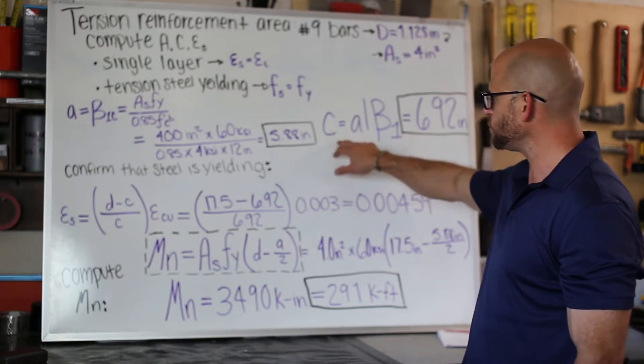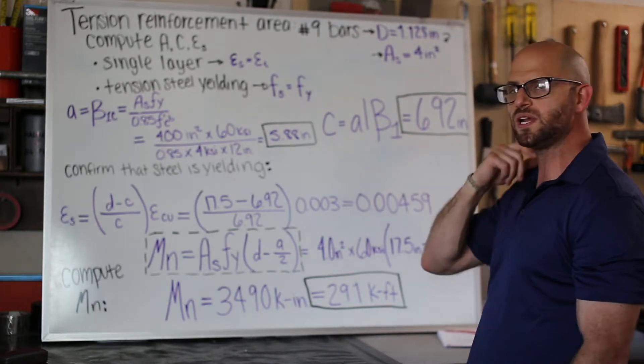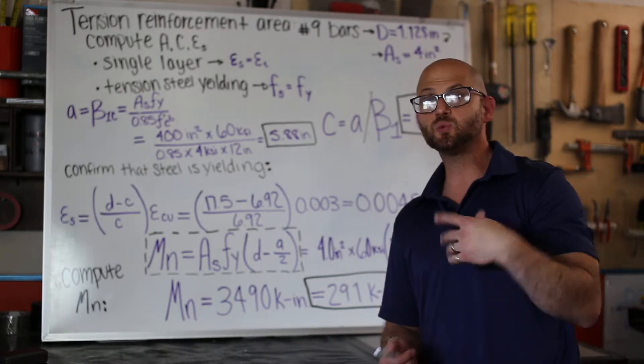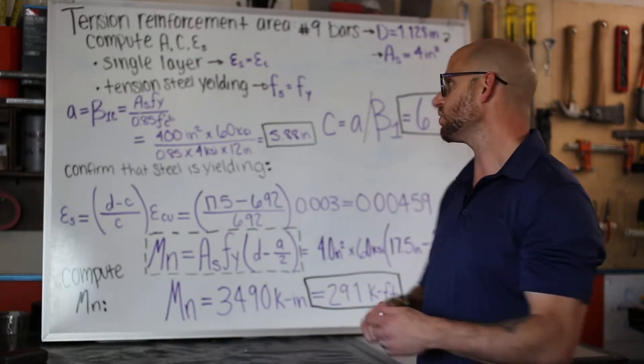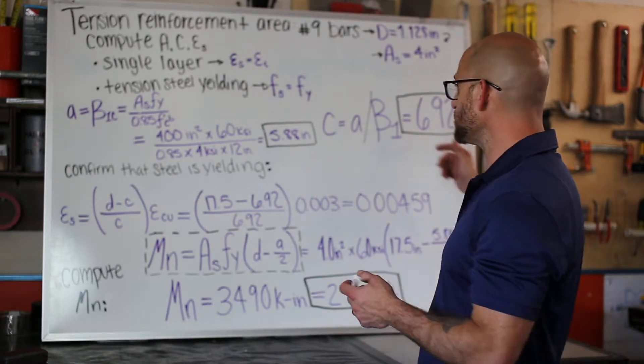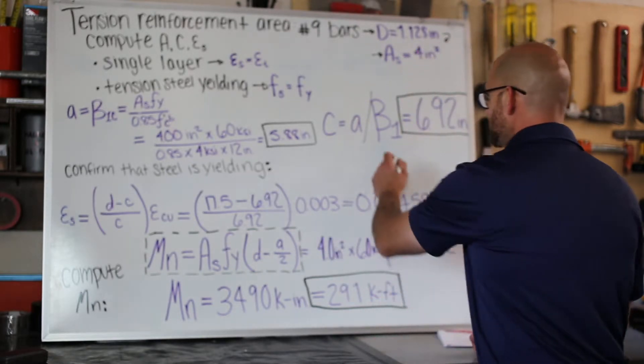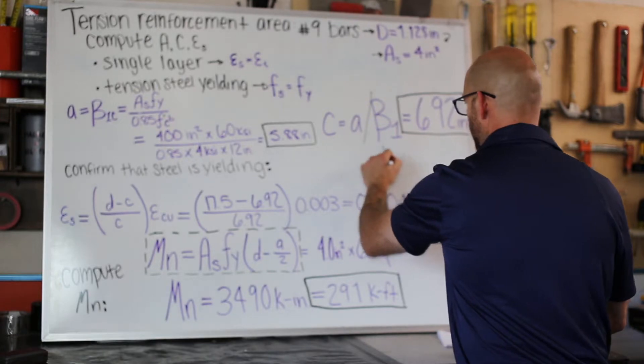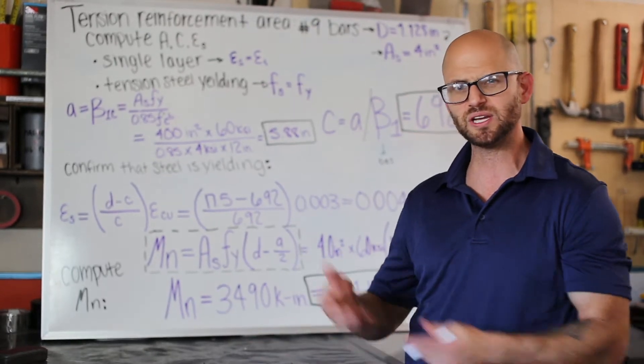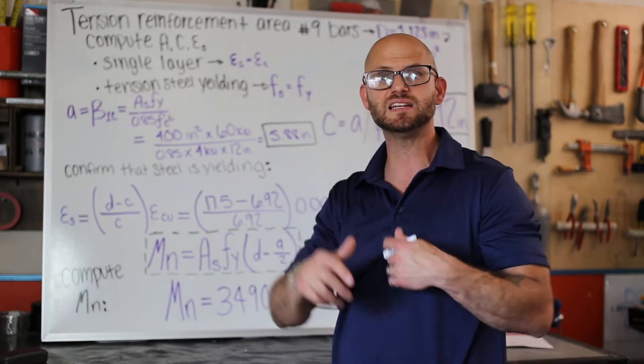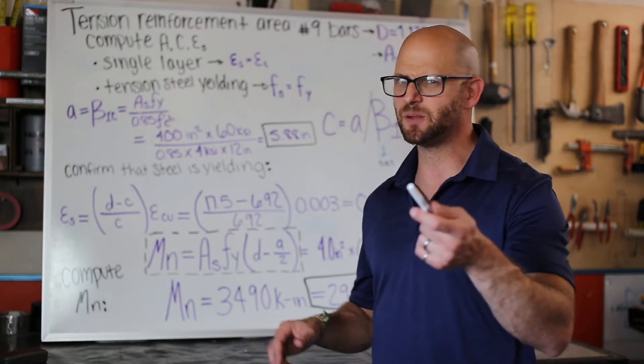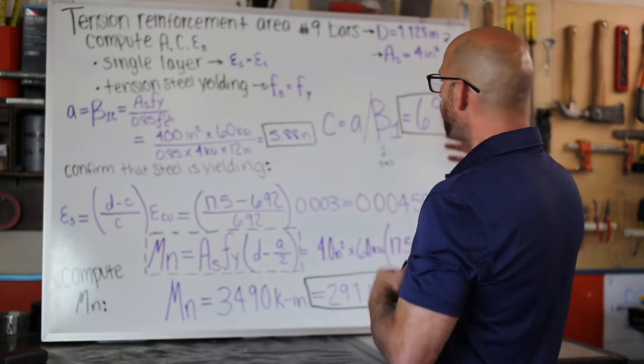We divide the depth of our Whitney stress block by this β₁. What β₁ is - it's one of those reduction factors, but this time it's based on the strength of the concrete. With 4,000 psi concrete, our β₁ = 0.85. If it was 6,000 psi concrete, we would have to bring that down. This calculation gives us the depth to the neutral axis c.